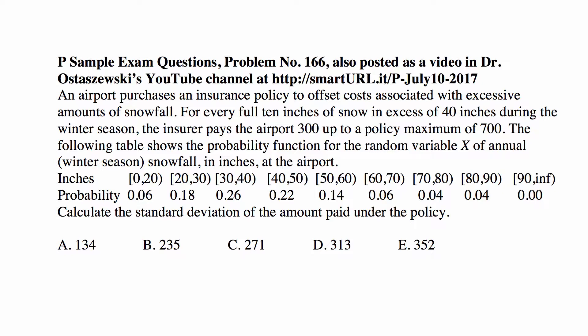Then between 50 and 60, the probability is 0.14. The payment in that case will be 300. From 60 to 70, the probability is 0.06 — that's another full 10 inches — so the total payment now will be 600. And then if the snowfall is 70 inches or more, which is a probability of 0.04 plus 0.04, we're going to hit the maximum of 700. There's not going to be a 900 payment; the payment will be 700.